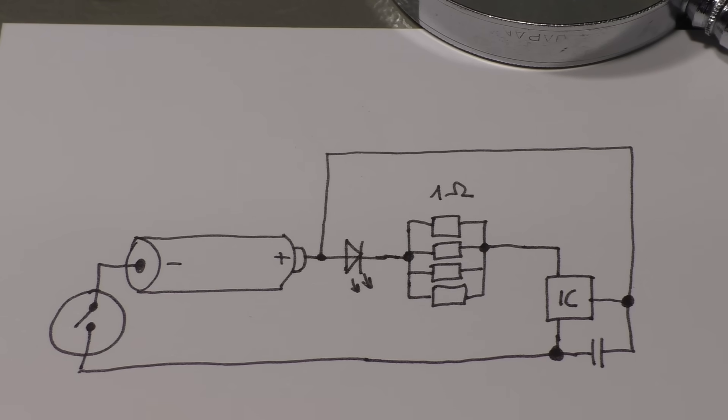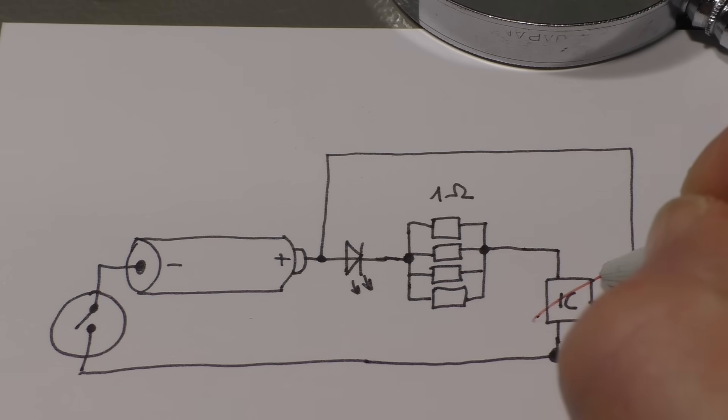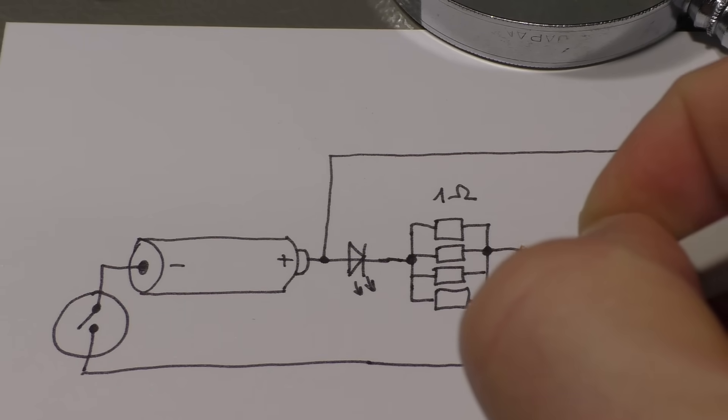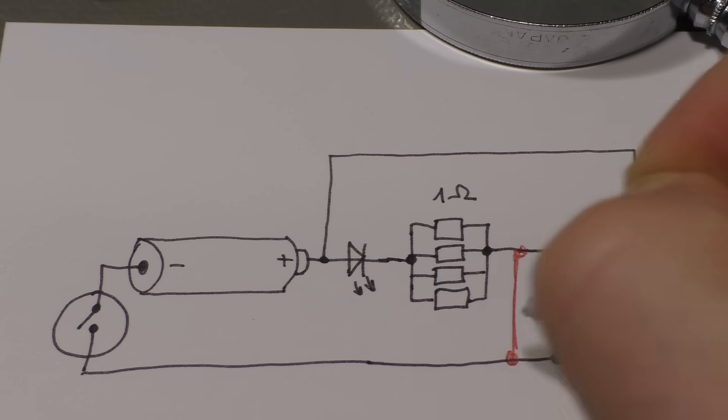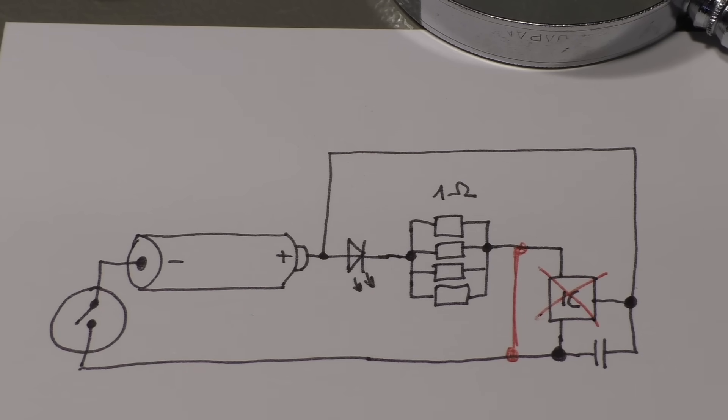You turn it on, then you interrupt the circuit here for a very short maybe tenth of a second. And that's enough for this IC to recognize this power drop. And to prevent that the whole thing resets to zero, there is this capacitor that stores the voltage from the battery for a fraction of a second or maybe a second. And that's the whole circuit.